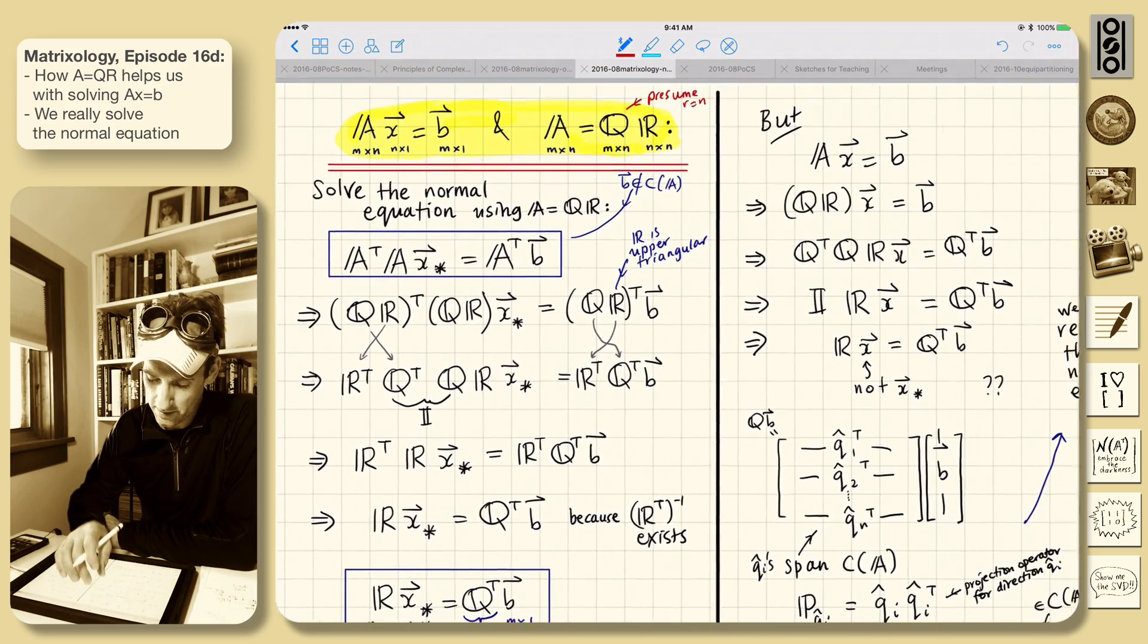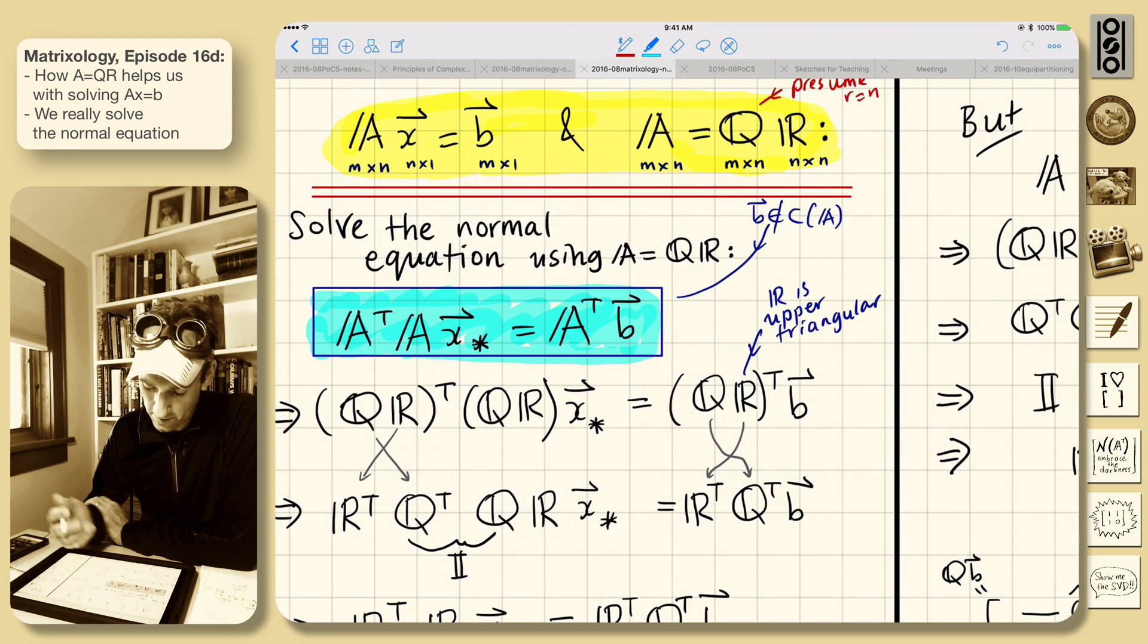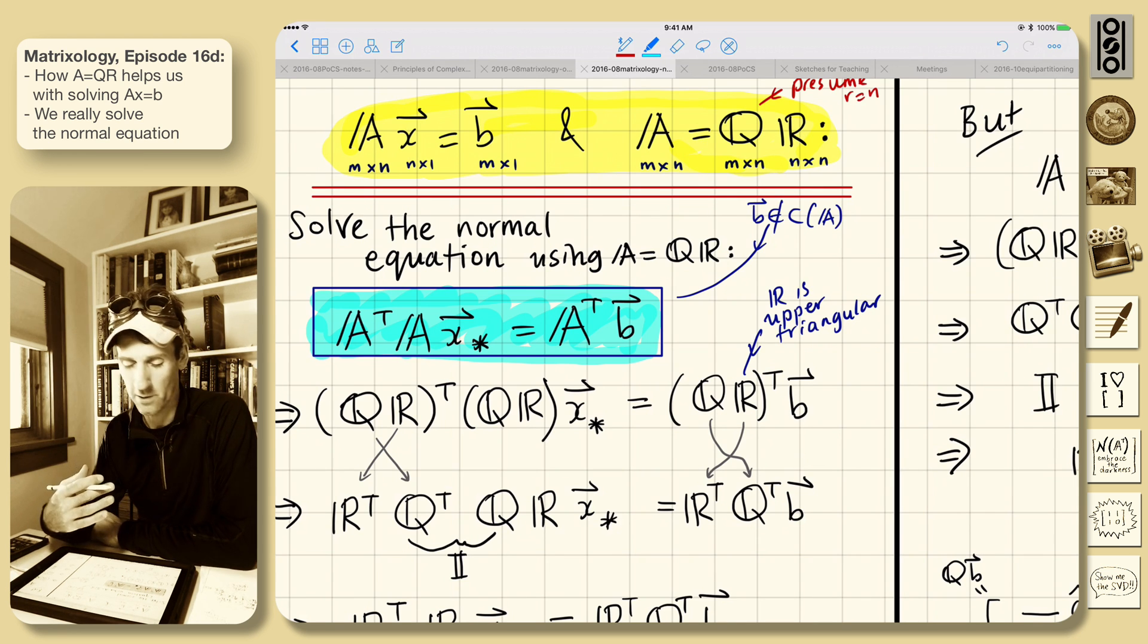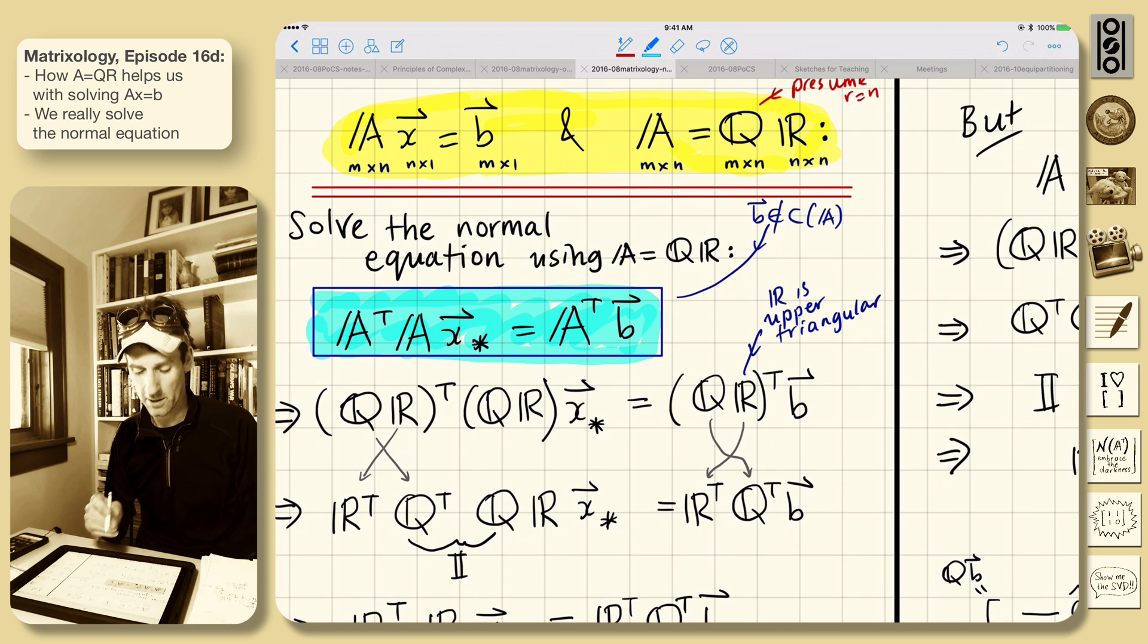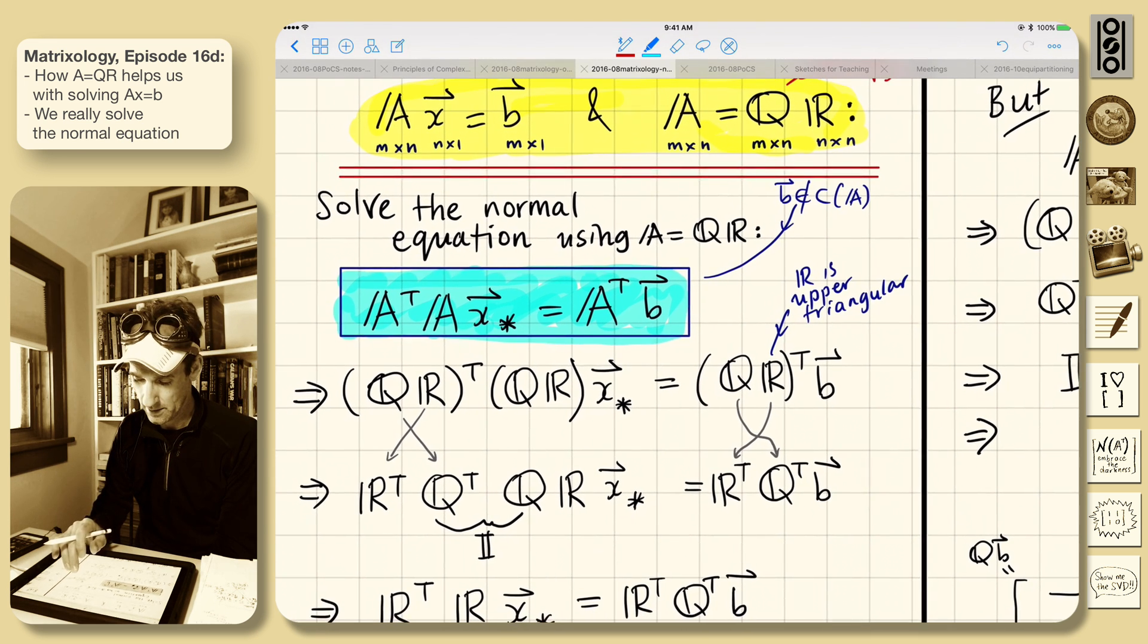So we're going to solve the normal equation using A equals QR. So here's our normal equation. We take AX equals B and we came to this understanding that if we pre-multiply by A transpose, we are suddenly in a solvable situation and we will find not necessarily the solution X, but X star, which gives us the best solution to AX equals B. It gives us A times X star goes to P, which is B's projection into column space. And that is the best we can do.